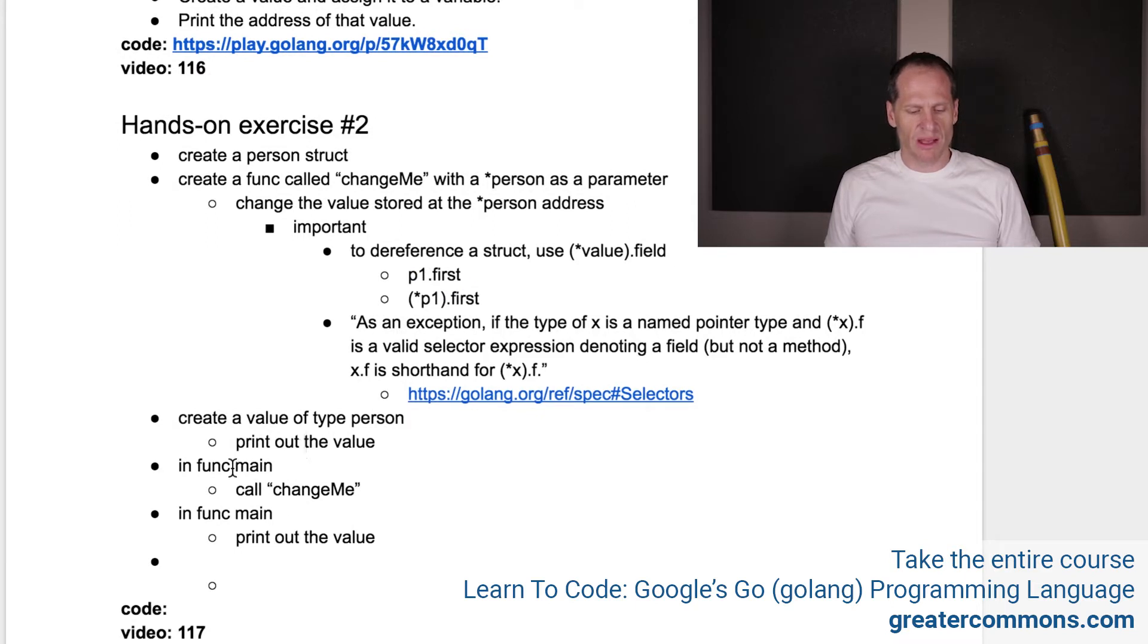Create a value of type person, print out the value, and in func main call changeMe, and in func main print out the value. All right, so let's do this. So you go try it. If you'd like to try it, pause the video, go try it. And once you've done that, come back, unpause it, and here's the solution.